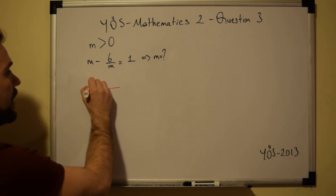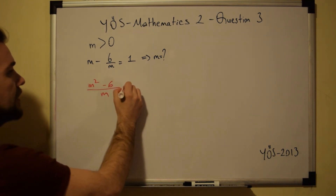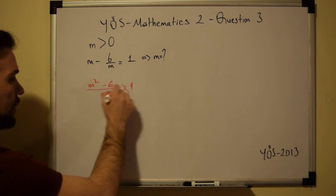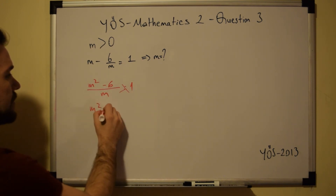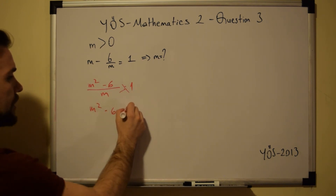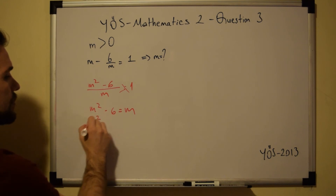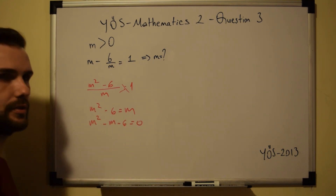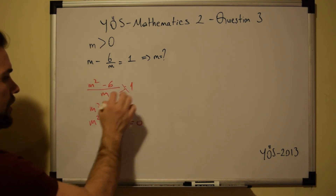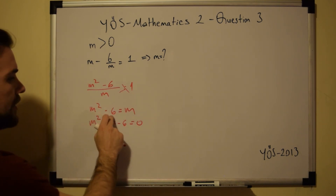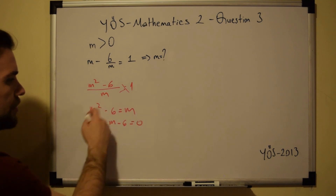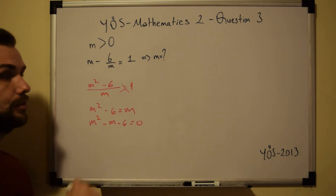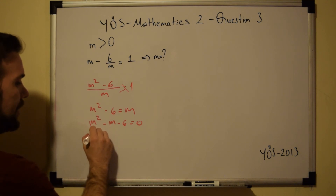So we have M squared minus 6 all over M equals 1. Cross-multiplying gives us M squared minus 6 equals M. Rearranging, we get M squared minus M minus 6 equals 0.